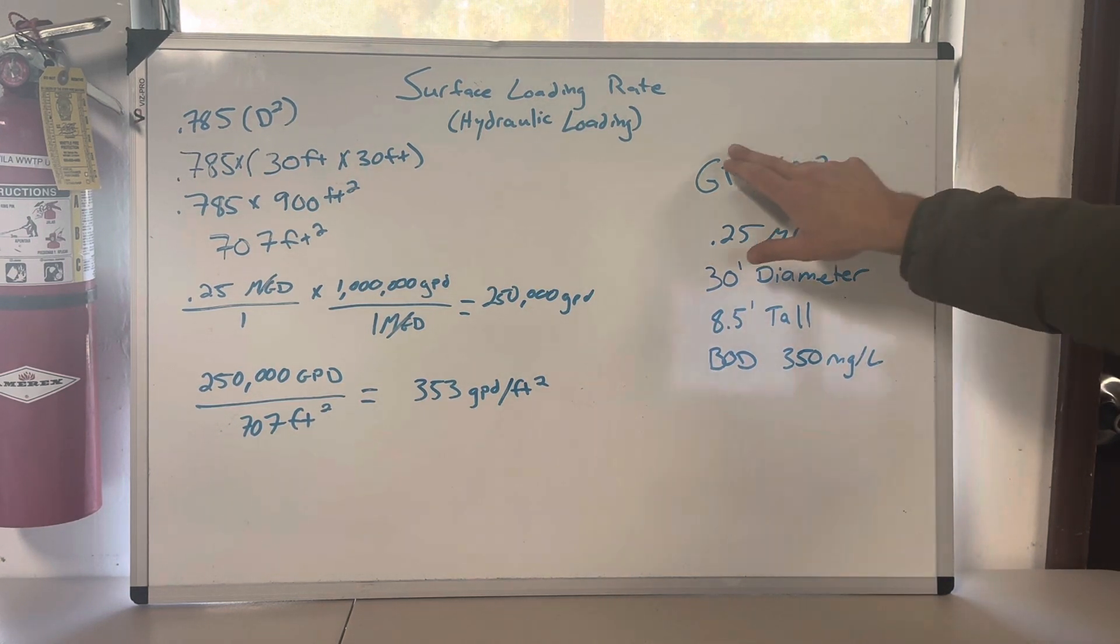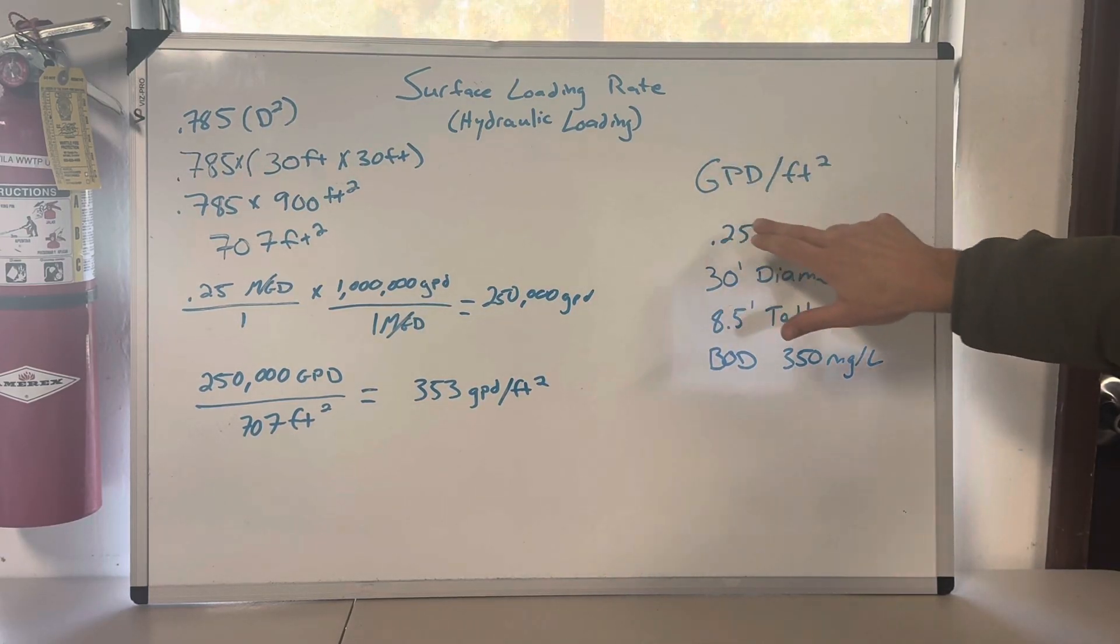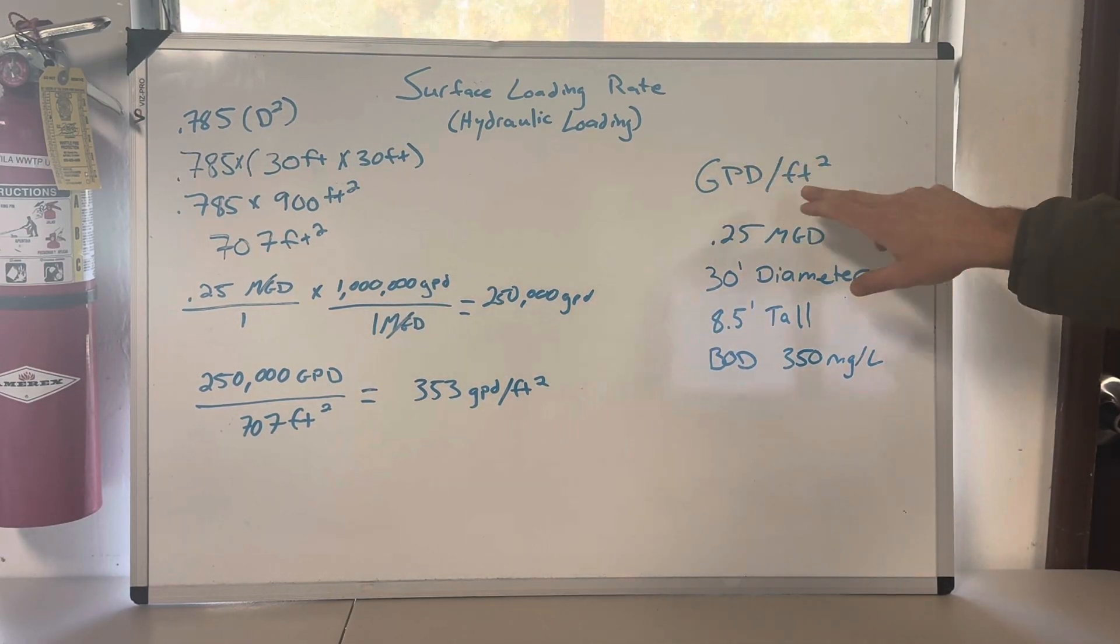It's gallons per day per square foot. Just use the units. Especially if you're on a multiple choice math question, use the units. If you forget that surface loading rate is gallons per day per square foot, look at the answer and they typically have the units for you, and you can reverse engineer the math problem.